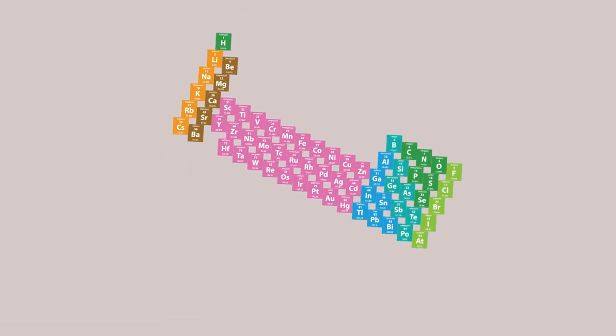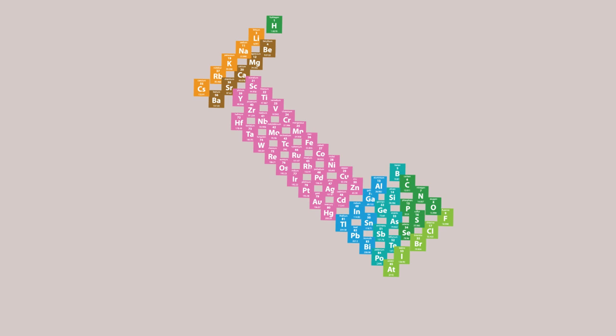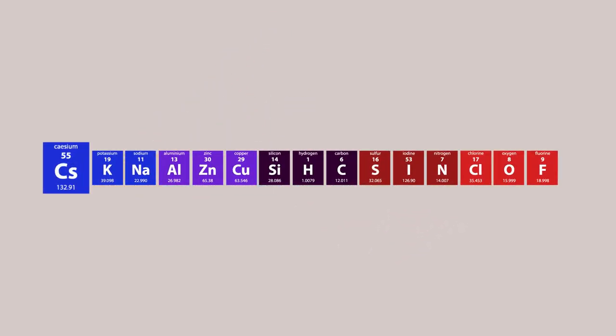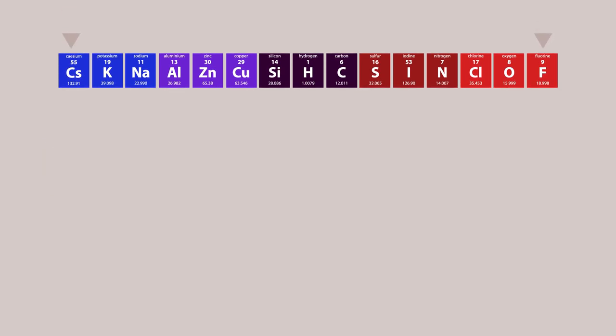If we twist the periodic table clockwise and then squash it flat, we pretty much have the elements arranged from the most metallic cesium to the most non-metallic fluorine. When these two extreme elements react, they form the stable white salt cesium fluoride.